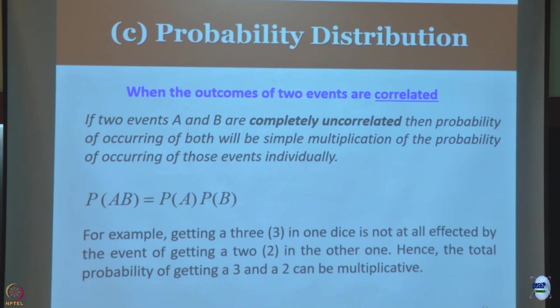Two independent events - the probability of happening is P(A) times P(B). So if I'm throwing a die, then 1/6 into 1/6, that becomes 1/36. Like if I have 1 and 5, then I get 1/36 for that joint probability distribution.